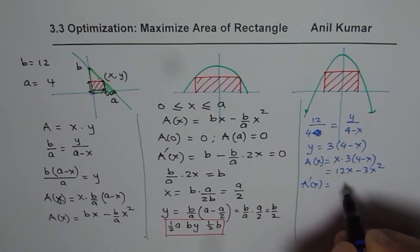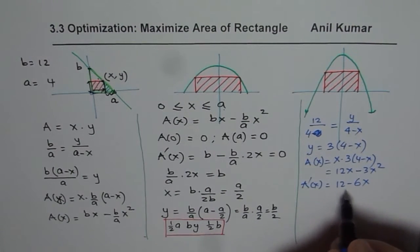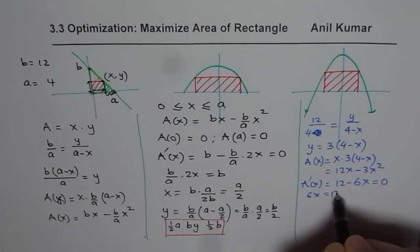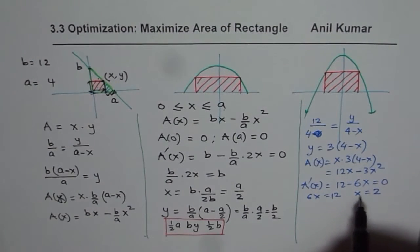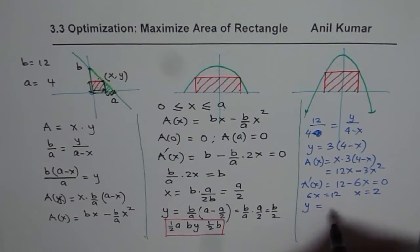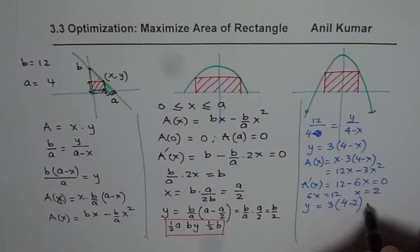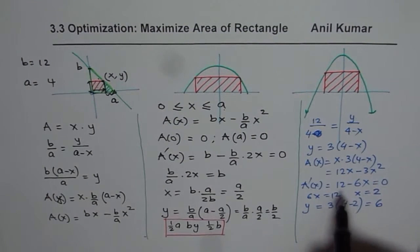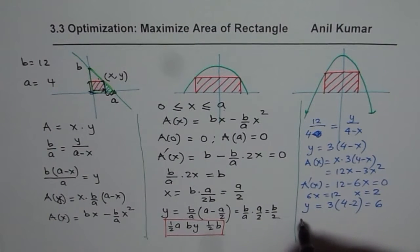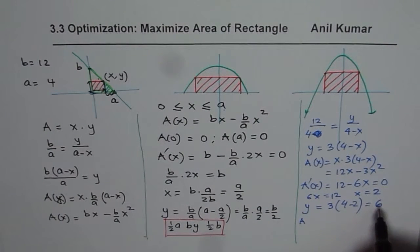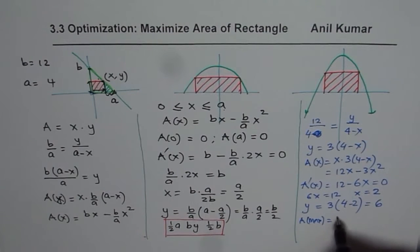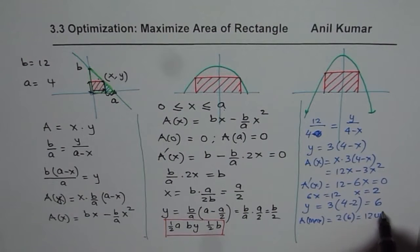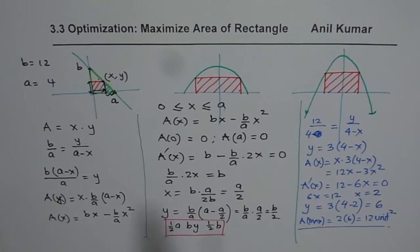The derivative is A'(x) = 12 − 6x. Setting equal to zero gives x = 2, which is indeed half of 4. Substituting x = 2: y = 3·(4 − 2) = 6, which is half of 12. So the maximum area is 2 × 6 = 12 square units.